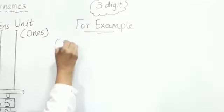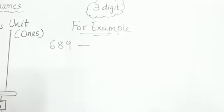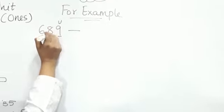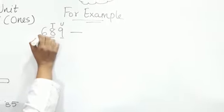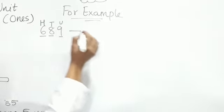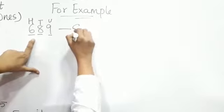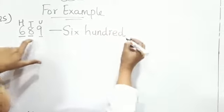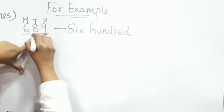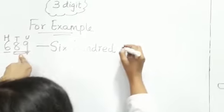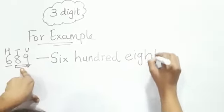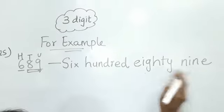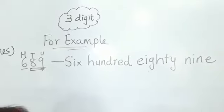Now one more example — that is 689. How will you write this? Firstly, 9 is on the unit place, 8 is on the tens place, and 6 is on the hundreds place. Then we will write 600 and 89. This is 689, or you can write six hundred and eighty nine.